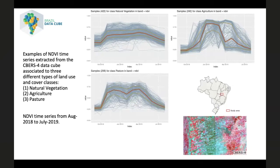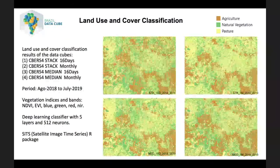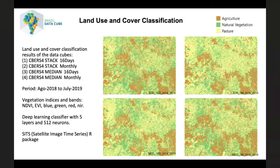The land use classes are natural vegetation, agriculture, and pasture. These time series associated to land use and cover samples are used to train machine learning methods in our workflow. This picture shows land use and cover classification results produced in the Brazil DataCube project, from four different data cubes of CBERS-4 images, using different time composition functions — stack and median — and different time steps — 16 days and monthly. We classified the time series of one agriculture year using vegetation indices and bands: NDVI, EVI, blue, green, red, and NIR, using a deep learning classifier with five layers developed in the sits R package.